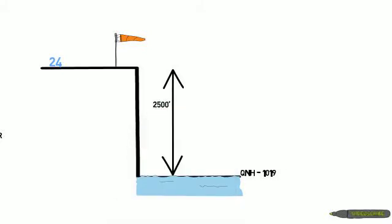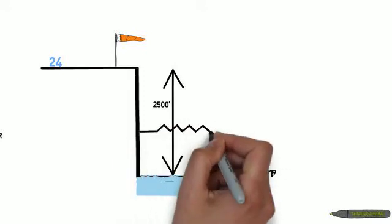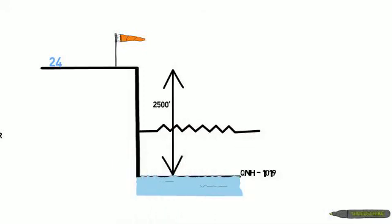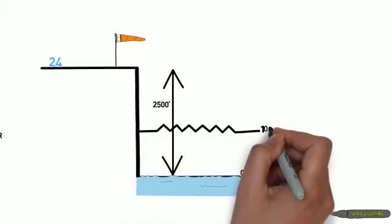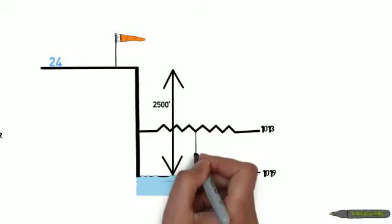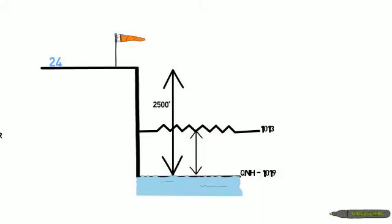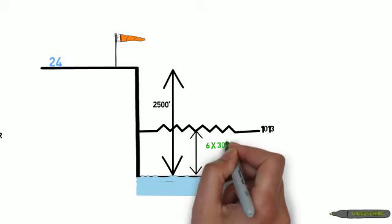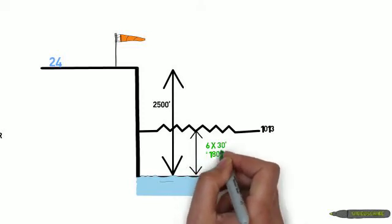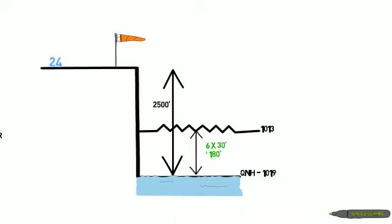Now think where the isodatum of 1013 would be. Is it above or below mean sea level? In this example, 1013 is less than the QNH, so as air pressure decreases with height, it must be above sea level. Now work out how far above sea level. The difference in air pressure is 6 hectopascals. We apply 30 feet per hectopascal, so 180 feet.